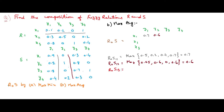Now moving to R∘S(1,3), which is x1 and z3. The maximum of averages: average of 0.1 and 0.3 is 0.2, average of 0.2 and 0.8 is 0.5, average of 0.0 and 0.7 is 0.35, and average of 1 and 0.3 is 0.65. The maximum of 0.2, 0.5, 0.35, and 0.65 is 0.65.